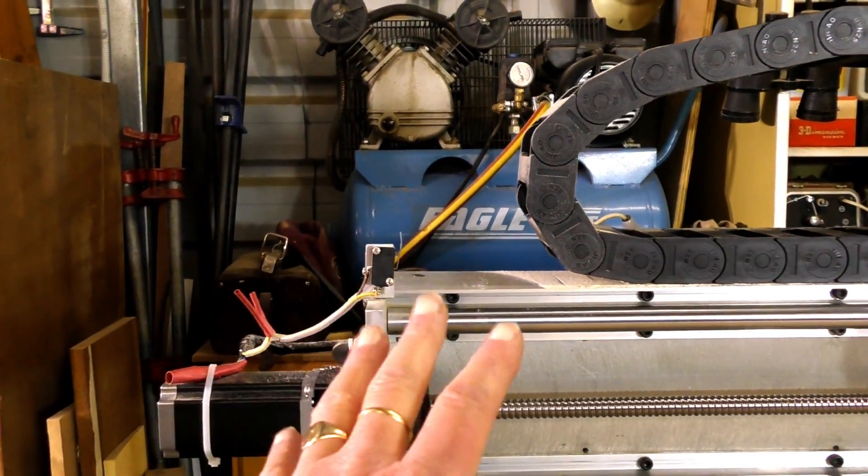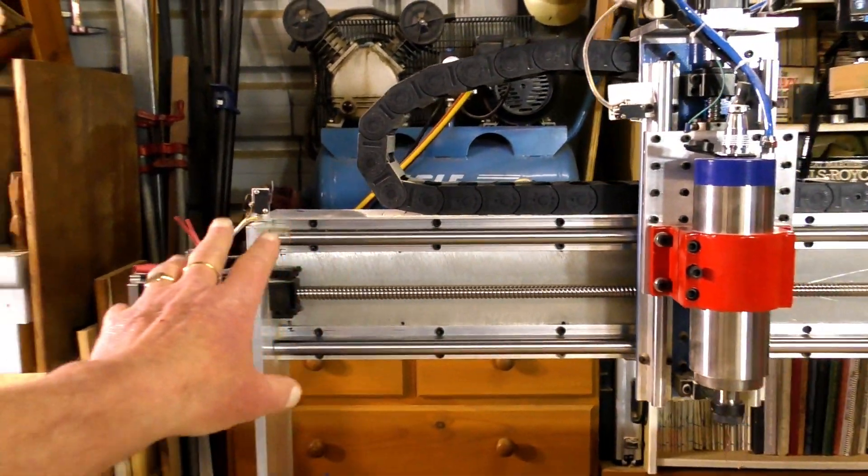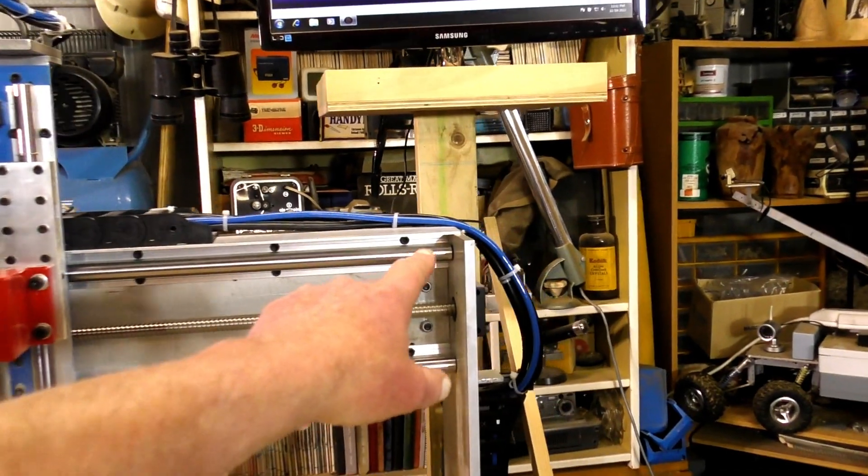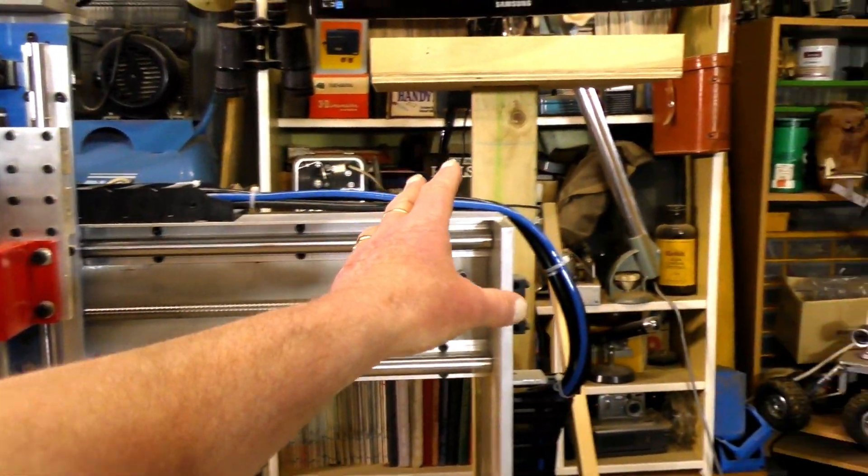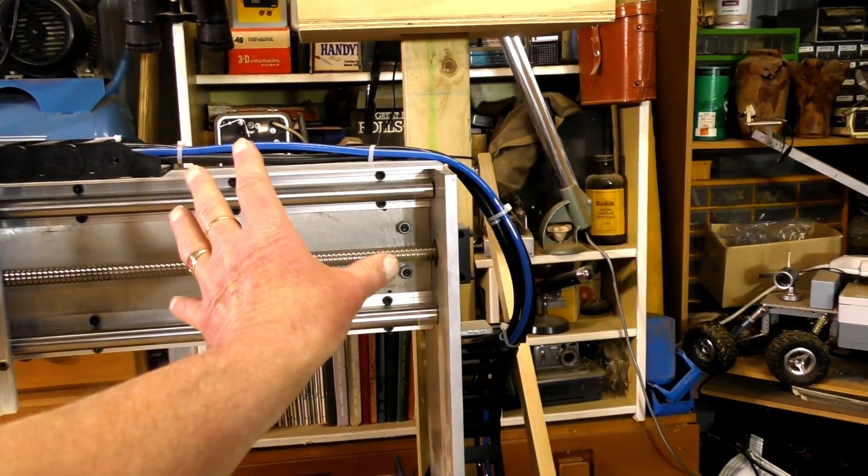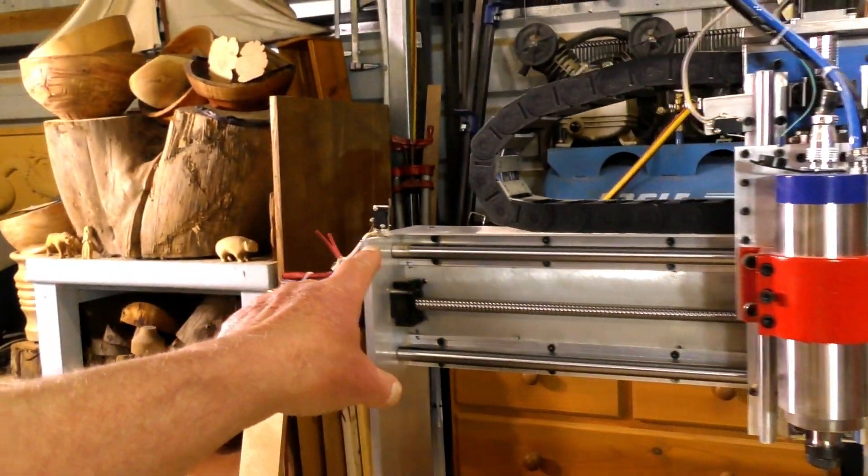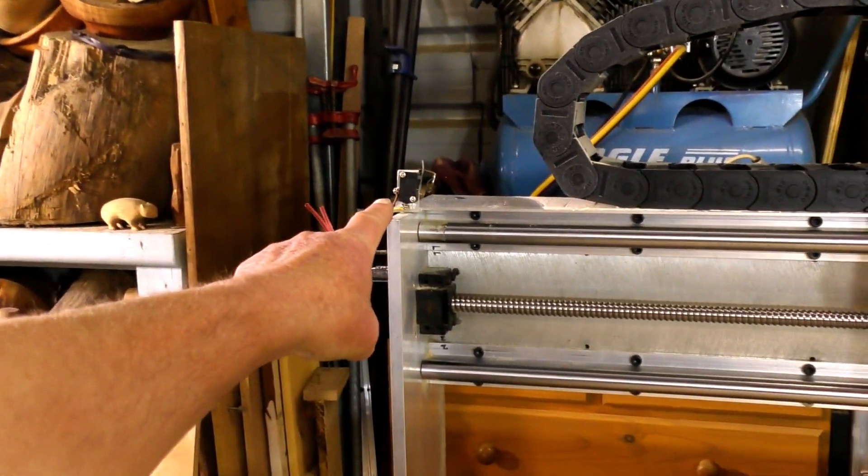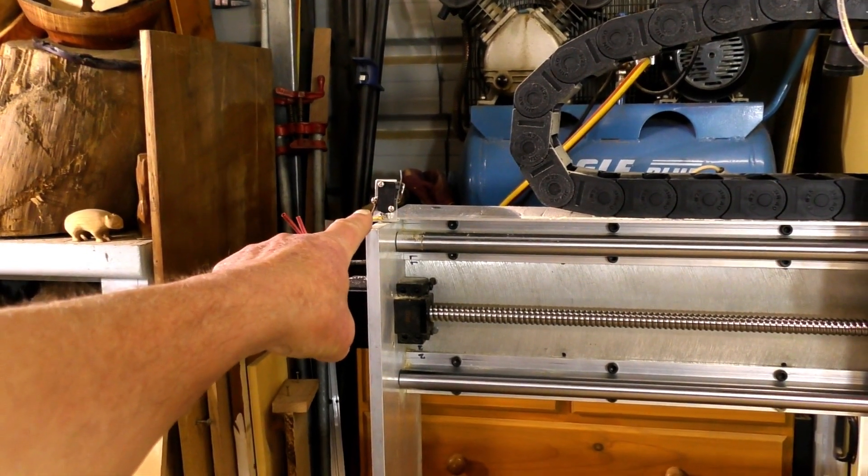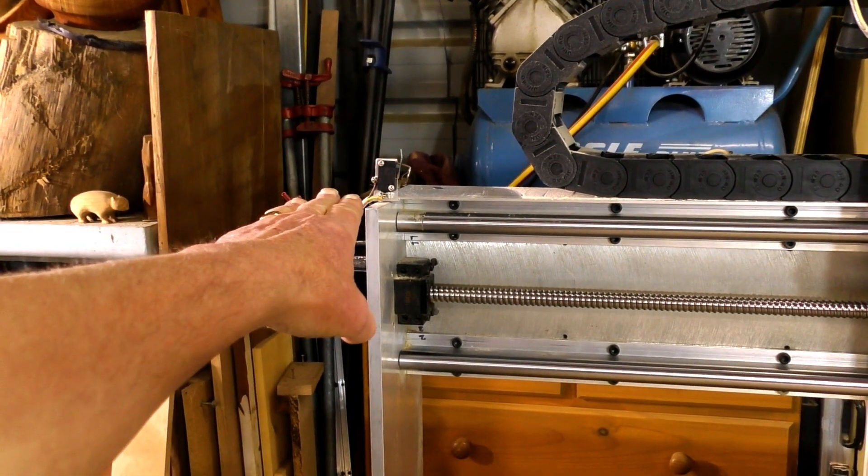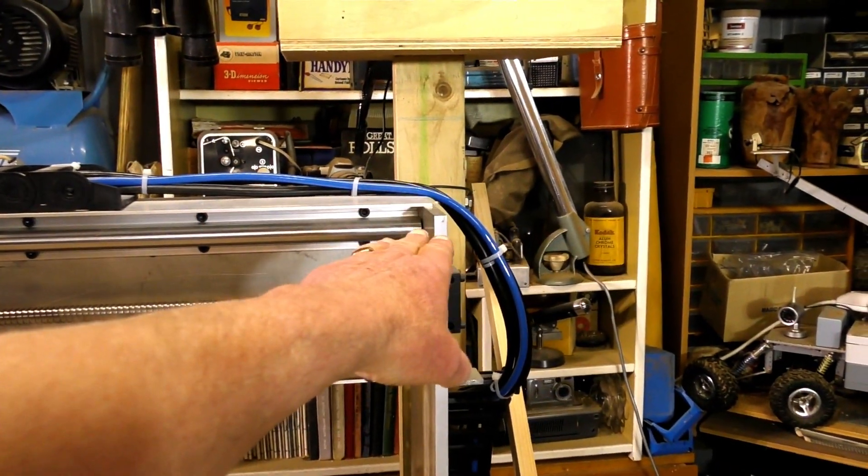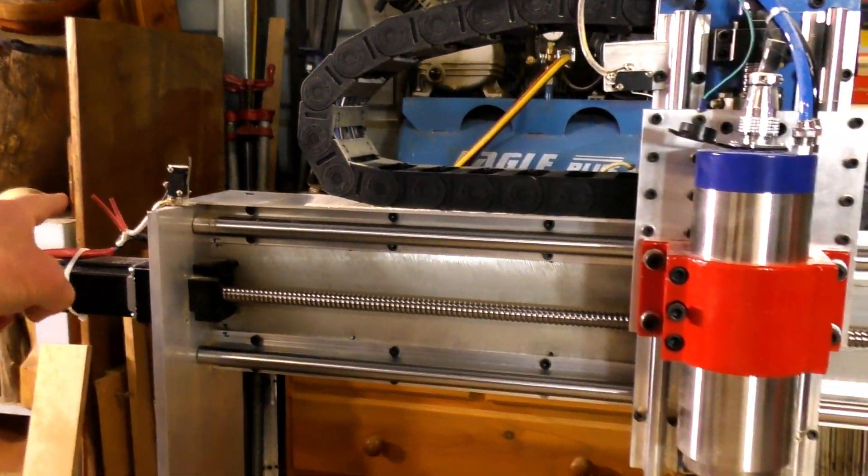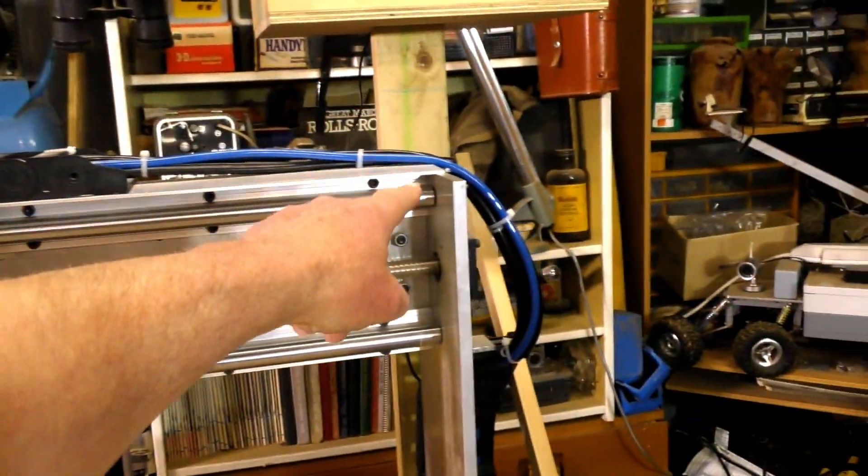So, say for example, you wanted to change the home position to register over this side and have the head come over and register on this side. You would physically have to remove the switch from there on the left-hand side and mount it on the right-hand side and reroute a cable round to it.